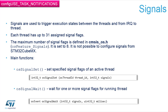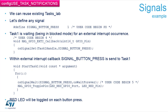Signals are a faster mechanism and allow you to give a specific task directly a signal. For example, we can define a button press as a signal with value one. When we enable the button interrupt on EXTI, we can put in the callback a signal sent to this specific task.